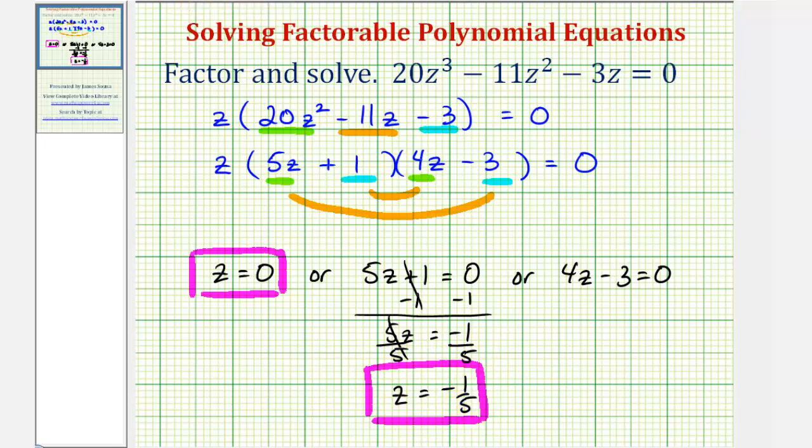And then finally for 4z minus 3 equals zero, we'd start by adding 3 to both sides. So we have 4z equals positive 3, divide both sides by 4, our third solution is z equals 3 fourths. I hope you found this helpful.